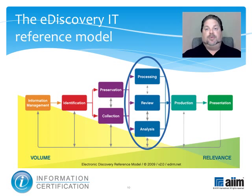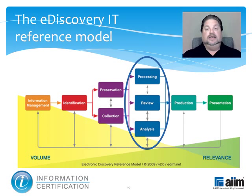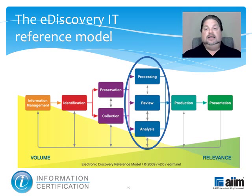The fourth segment involves processing, review, and analysis. These steps are aimed at reducing the volume of ESI and converting it, if necessary, to forms more suitable for review and analysis — evaluating it for relevance and privilege, and evaluating it for content and context, including key patterns, topics, people, and discussions.